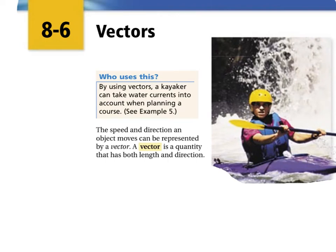In the last section of Chapter 8, we're going to talk about vectors in Section 8.6. A vector is a quantity that has both a length and a direction. The speed and direction an object moves can be represented by a vector, so the vector tells us speed and direction.